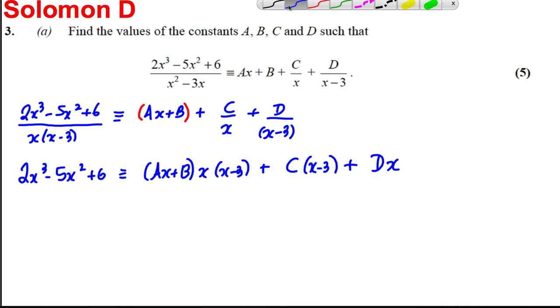The first thing we're going to do is we're going to let X equal 0. That would mean this term and this and this term would disappear. So we would get ourselves 6 is equal to -3C, which implies that C is -2. Then we would let X be equal to 3, positive 3.